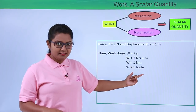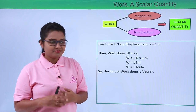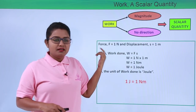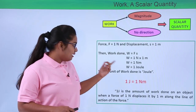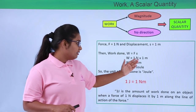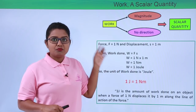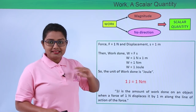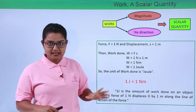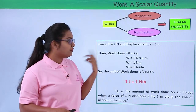This unit is named to honor a scientist whose name was Joule. We can define one Joule as one Newton meter. In other words, one Joule of work is the amount of work done on an object when a force of one Newton is applied to it and displaces it by one meter along the line of action of the force. When one Newton of force is applied and the body moves one meter in the direction of force, the work done is one Joule.